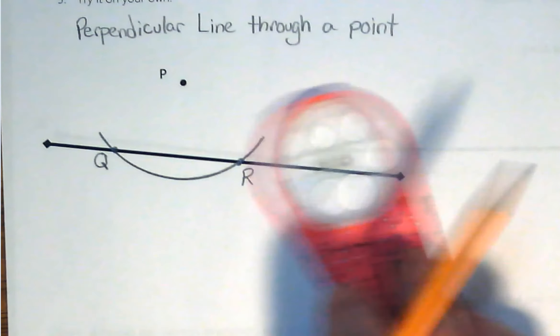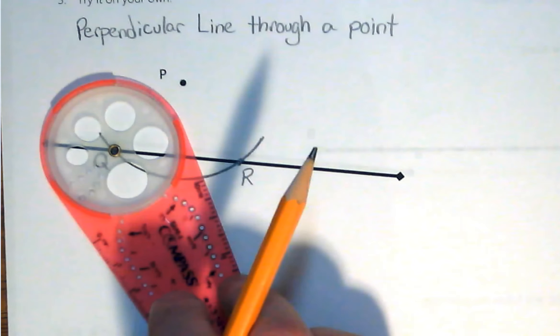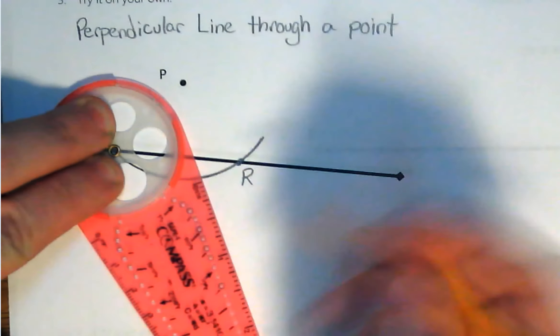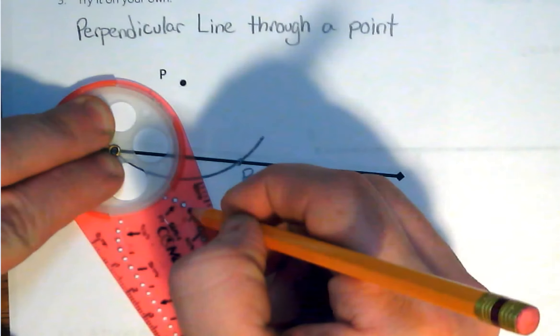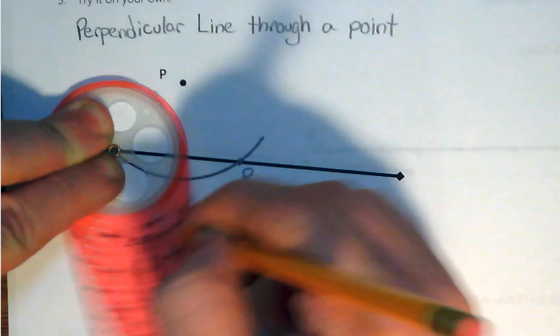And what we're going to do with those points is we're actually going to draw some more arcs. So we're going to put our compass center on that first point Q, center it on there. And then we're going to draw an arc below this line. So I'm just going to draw an arc like that.